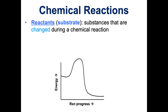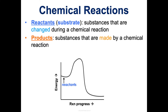Reactants are also known as substrate in biology — these are substances that are changed during the chemical reaction. Think of them as the ingredients in the reaction. The products are the substances that are made by the chemical reaction — the results at the end of the reaction.